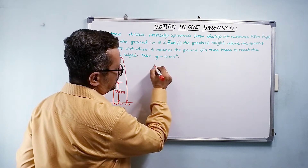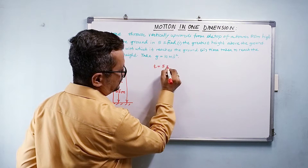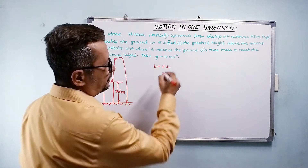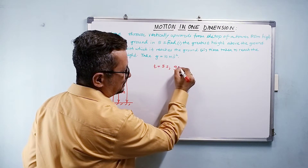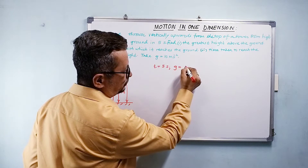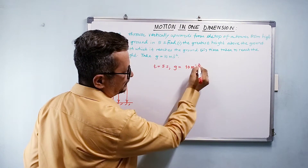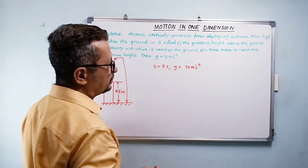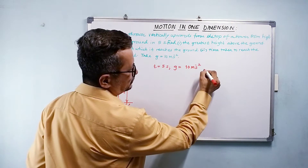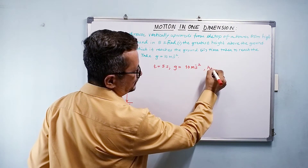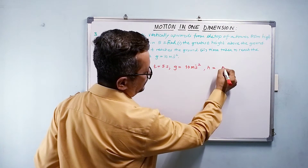They have told us that the stone reaches the ground in five seconds, so t equals five seconds. g equals 10 meter per second square, and height of tower h equals 85 meters.